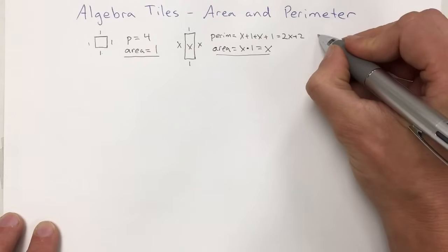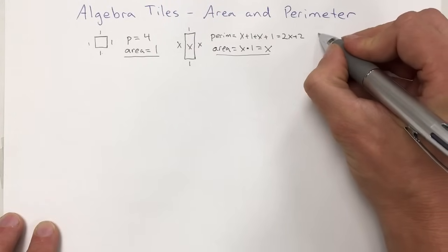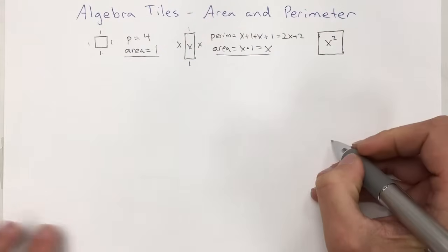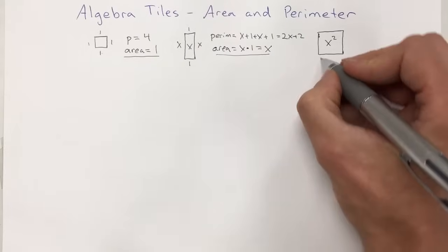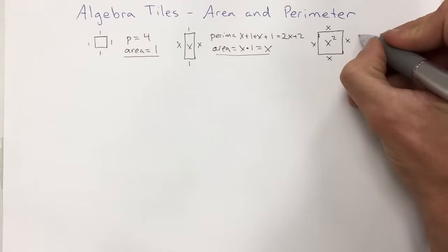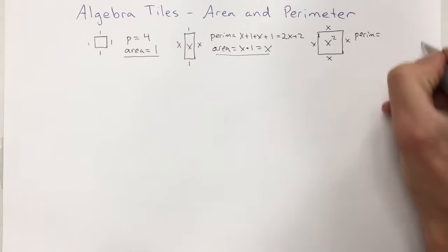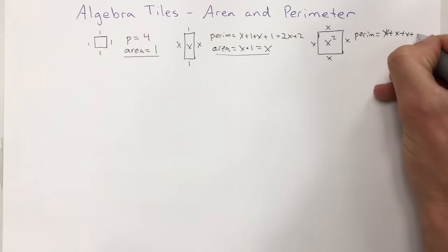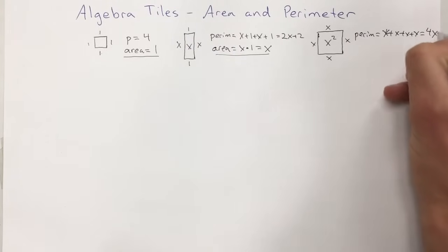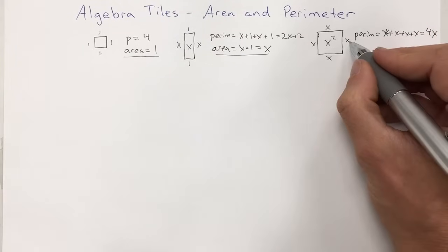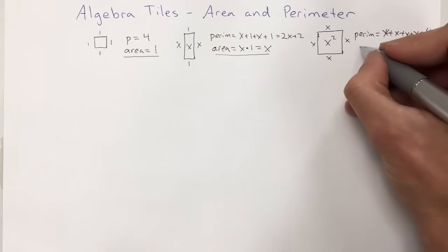The third shape you'll sometimes see with algebra tiles is a larger square, which often has x² written in it. That means each side — both length and width — is x. So the perimeter is x plus x plus x plus x, which equals 4x. The area is x times x, which is x².